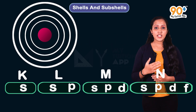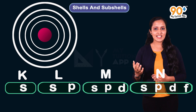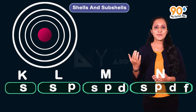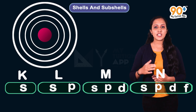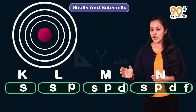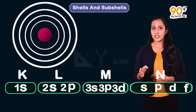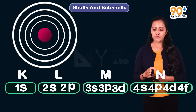To identify each subshell, we place the shell number before the subshell name. Then it becomes 1s, 2s, 2p, 3s, 3p, 3d, 4s, 4p, 4d, and 4f.